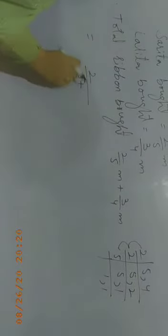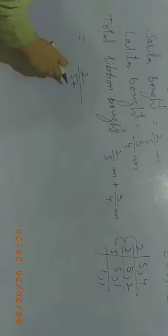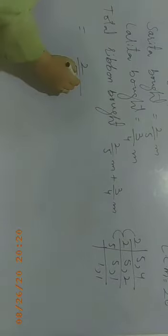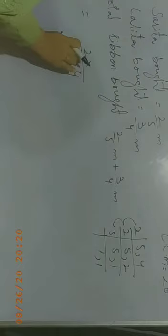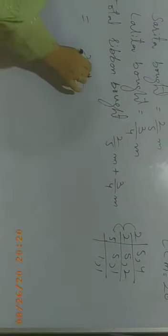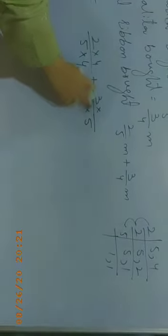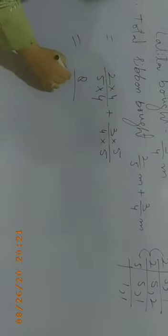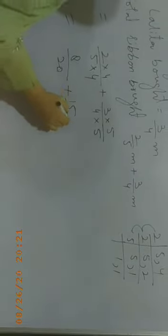Two by five plus three by four. Five twos are ten, four fives are twenty. Four plus three by four, four ones are four.